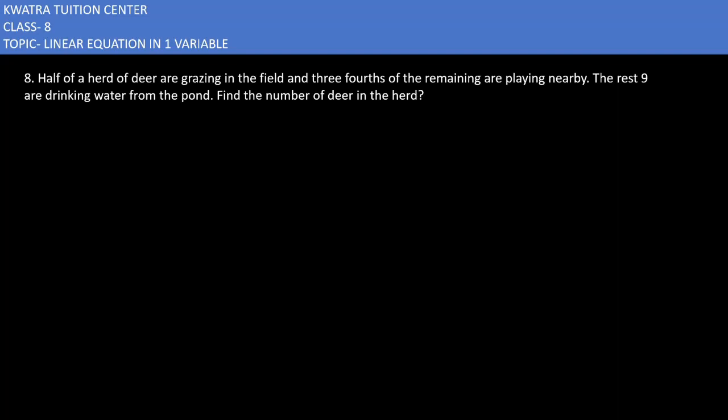Let's start with the eighth one. It says half of a herd of deer are grazing in the field and three-fourths of the remaining are playing nearby. The rest nine are drinking water from the pond. Find the number of deer in the herd.